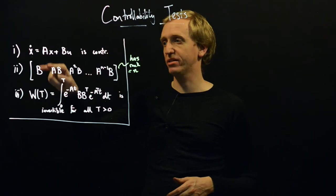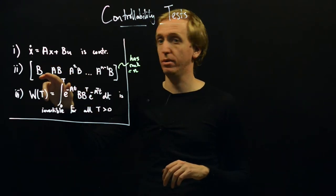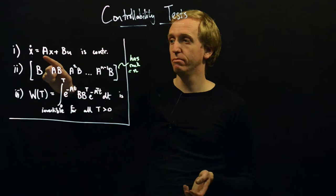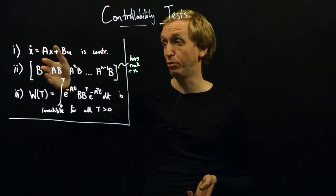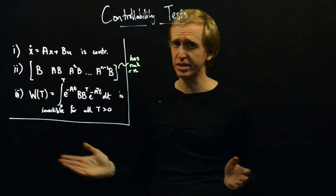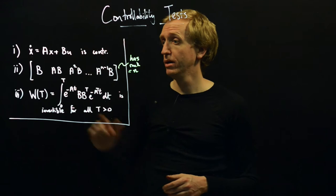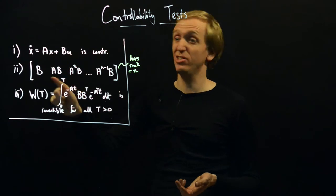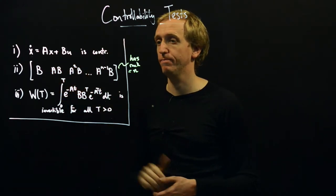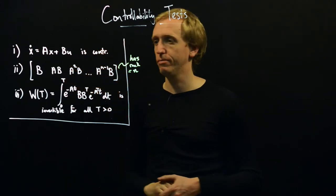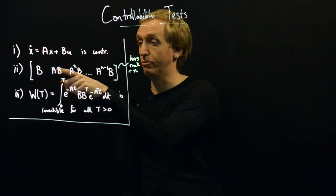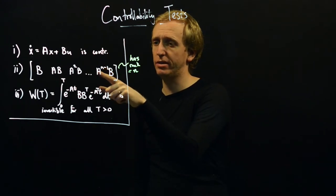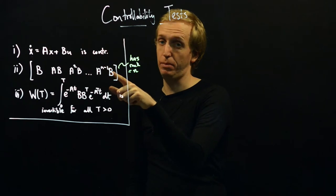In the first block column of the controllability matrix, we put the matrix B. For single-input single-output systems, B is just a column vector. Next, we put in A multiplied by B — again just another column vector — and we keep slotting in these block matrices, building up the full matrix, continuing until we put in A to the N minus one multiplied by B.